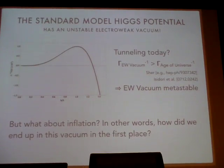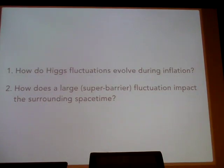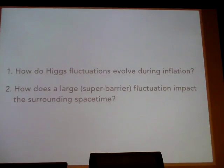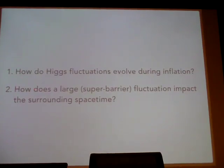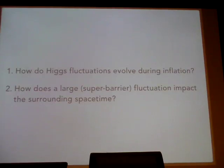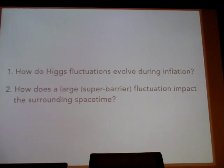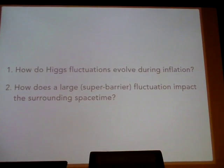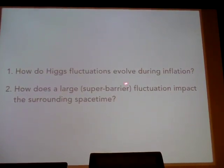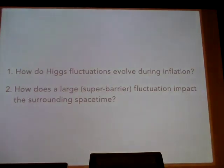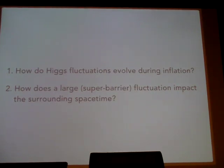The important aspects to answering this question can be broken down into two sub-questions. First: how does the Higgs field evolve — in particular, how does a fluctuation in the Higgs field evolve during inflation? That's important because you need to know whether during the inflationary epoch the field is actually going to sample the unstable part of the potential. Second: if you do manage to fluctuate out of the electroweak vacuum, do you care what happens? That boils down to the impact of large fluctuations on field evolution and on the surrounding spacetime.